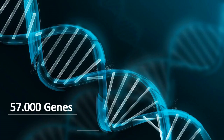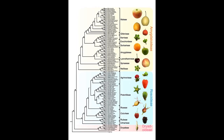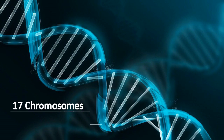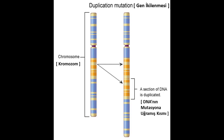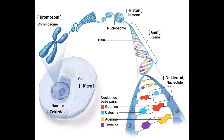An apple has about 57,000 genes — the highest number of any plant genome studied to date. Other plants in the Rosacea family have 7 to 9 chromosomes, but the apple has 17 chromosomes. 60 million years ago it had 9 chromosomes, but a duplication mutation helped it survive. This complex structure, formed by the sequence of millions of nucleotides, stores genetic information and passes it on from generation to generation.